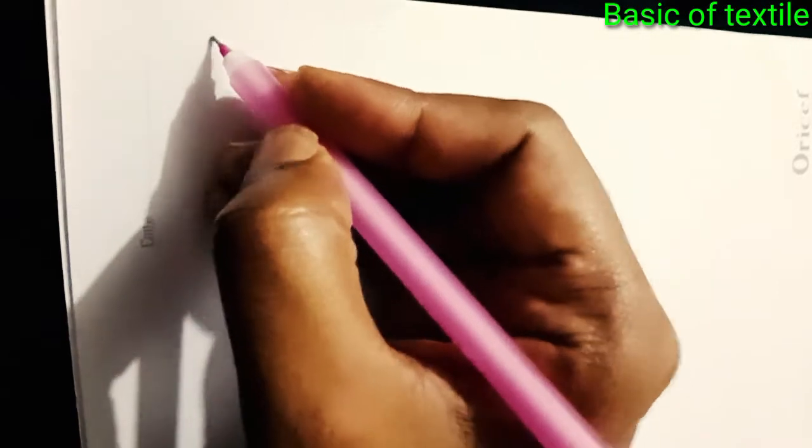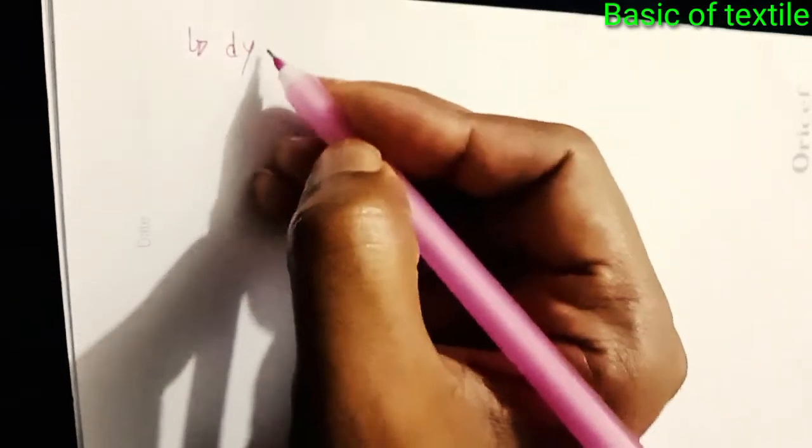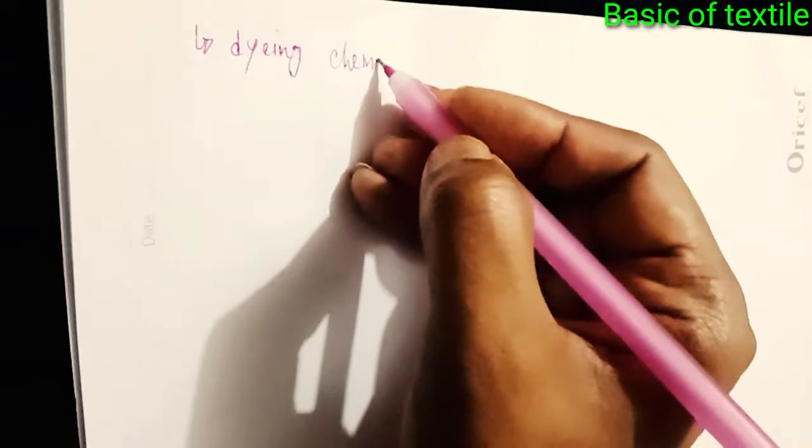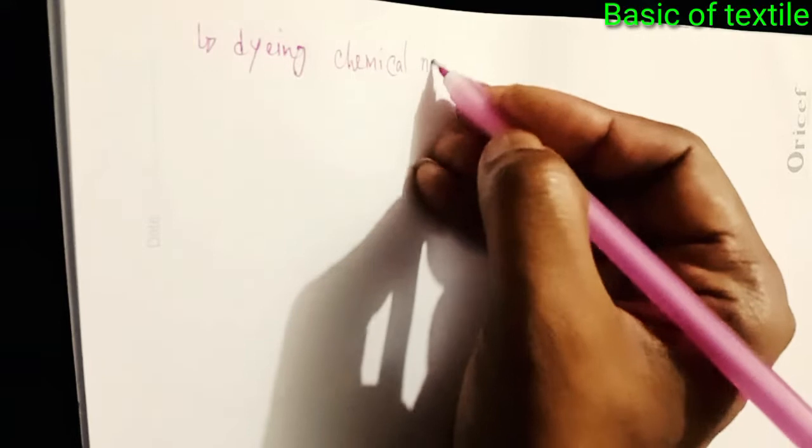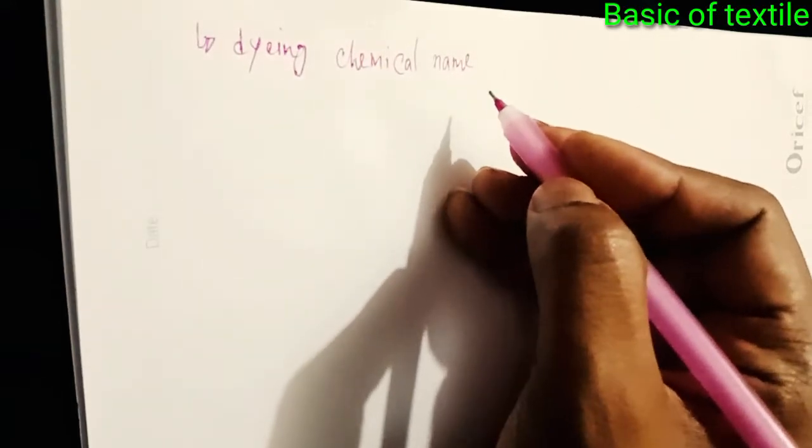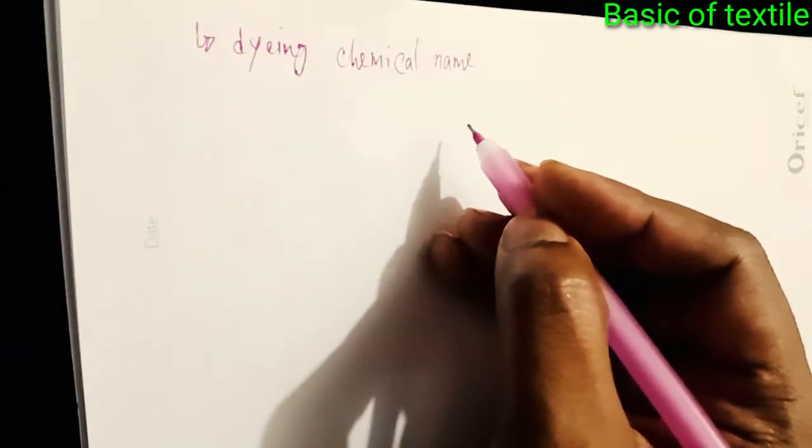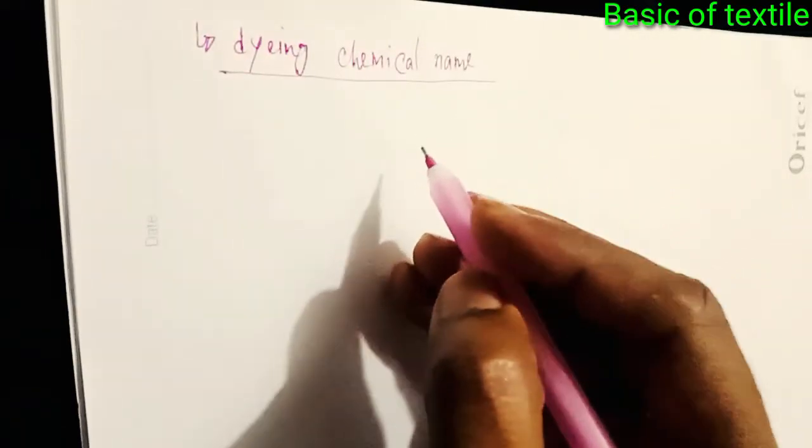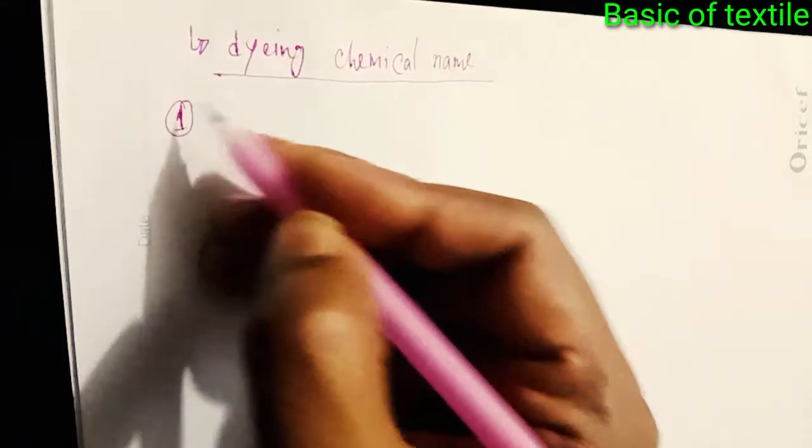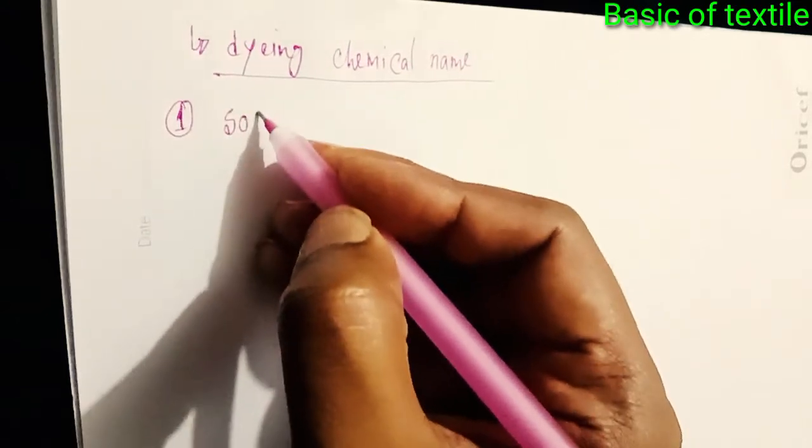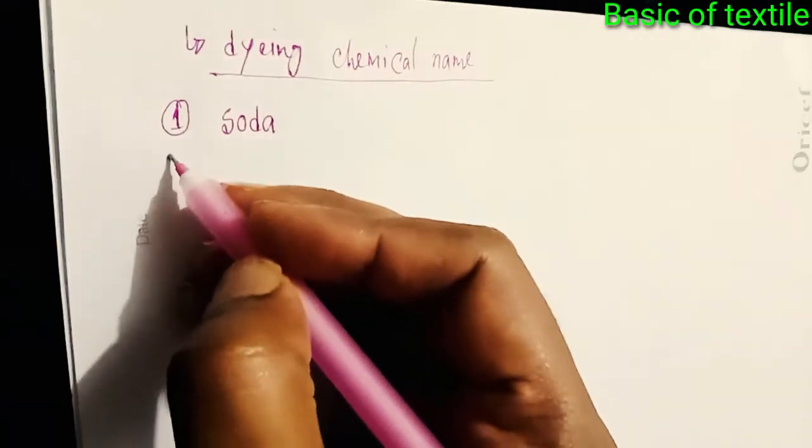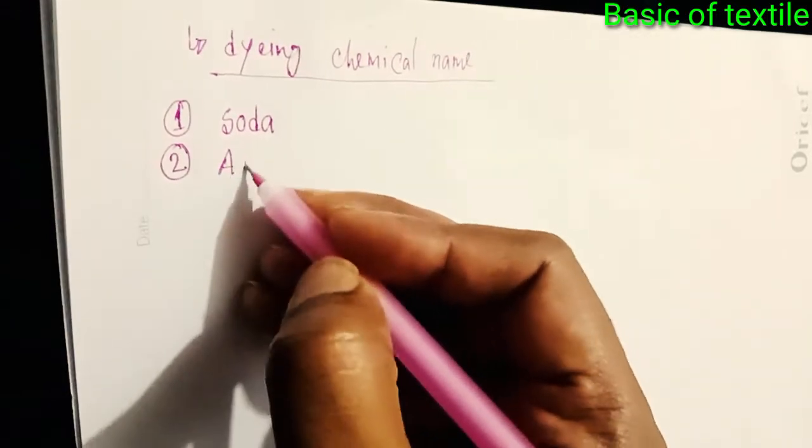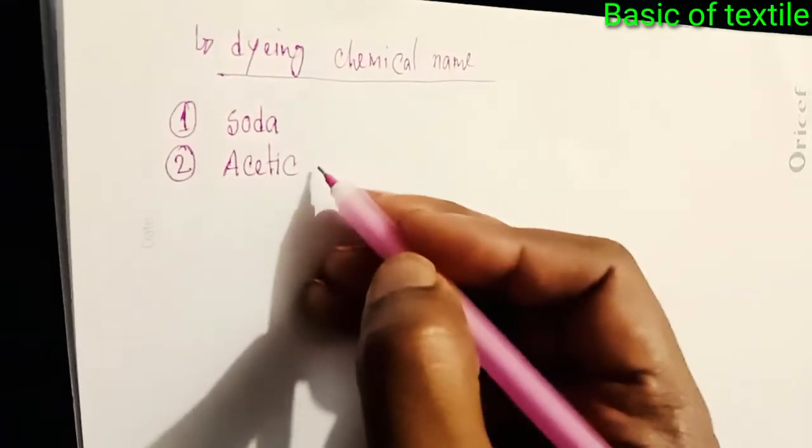Dyeing chemical name. Number one: soda. Number two: acetic acid.